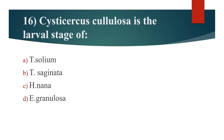16th question: Cysticercus cellulosae is the larval stage of? Option A: Taenia solium. Option B: Taenia saginata. Option C: Hymenolepis nana. Option D: Echinococcus granulosus. Answer is Option A: Taenia solium.